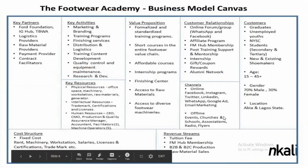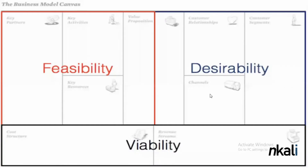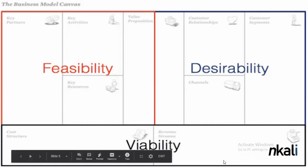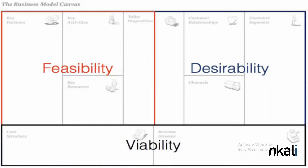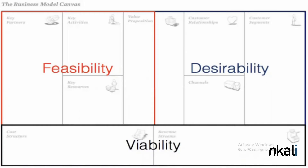From what you said, the desirability is what shows what would make someone love your business. The feasibility is all the things you would need to make it possible — the activities, the people, everything on the left side. And the viability — if it's worth the trouble — is what it will cost you financially and how you make money. After you're done with this canvas, it will help you think about every area of your business very succinctly.